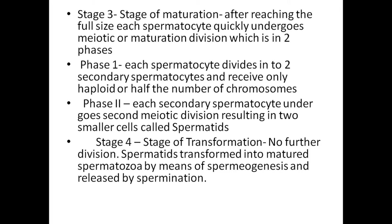Phase 1: each primary spermatocyte divides into two secondary spermatocytes, receiving only the haploid or half number of chromosomes. Phase 2: each secondary spermatocyte undergoes a second meiotic division, resulting in two smaller cells known as spermatids. Stage 4 — Stage of transformation: spermatids are transformed into mature spermatozoa by spermiogenesis and released by spermiation.